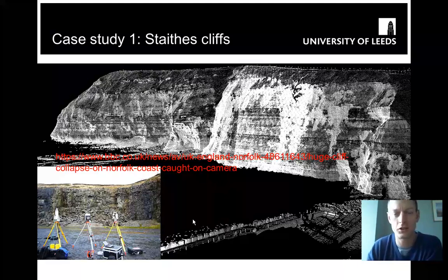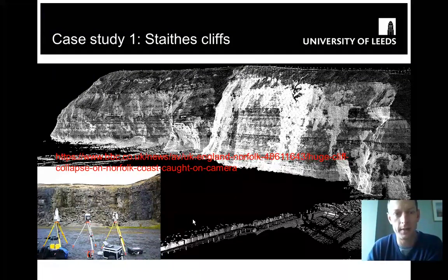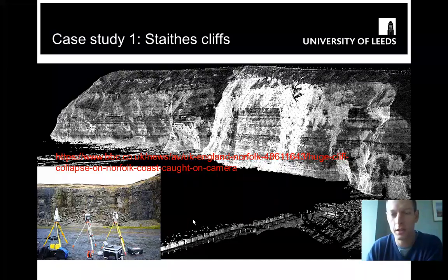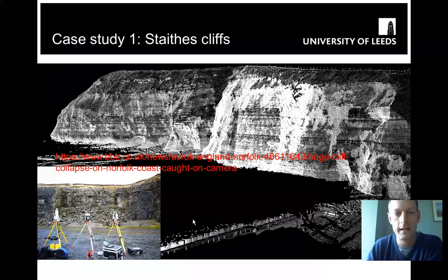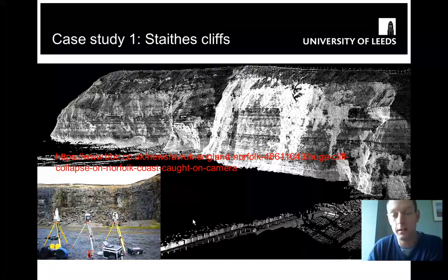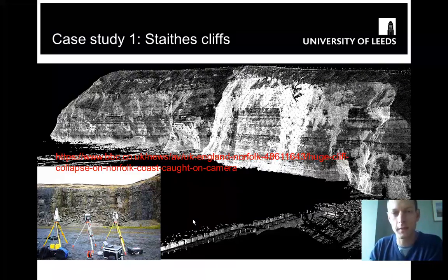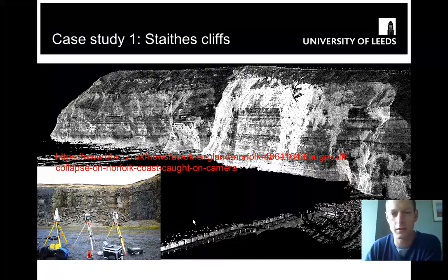The first case study I'd like to show you is of states cliffs, a rapidly eroding coastline, hazardous to people enjoying the beach, to fishing, and obviously of concern to people on the cliff top, the caravan sites and the old mining sites too. The scale of this survey is many hundreds of metres in width and many tens of metres in height, and the resolution — if we zoom in — is about 20 to 30 points per square metre. So a very, very high resolution survey.